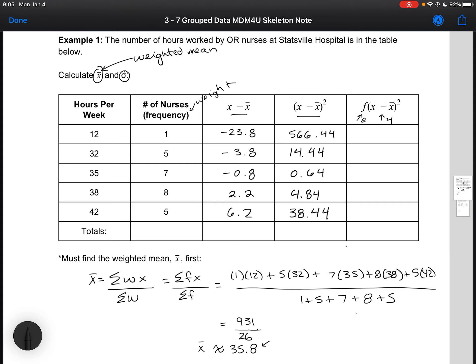Finally, because we have a frequency table, we have another column. We need to multiply our frequency by our deviation squared. So for the first one, we've got 1 times 566.44, which is the same value. For the next one, I have 5 times 14.44.